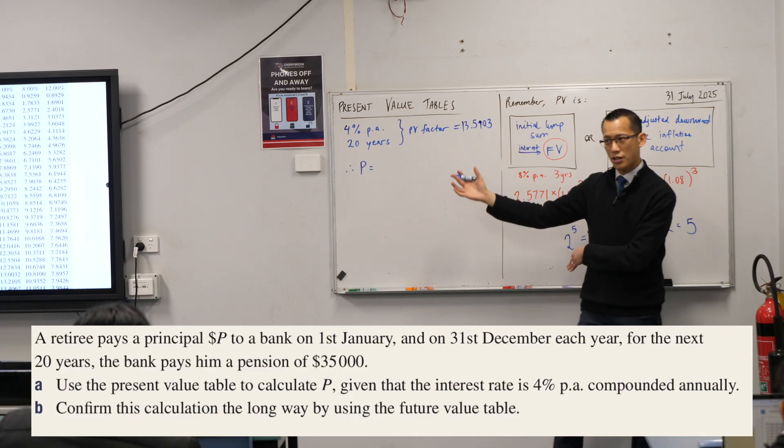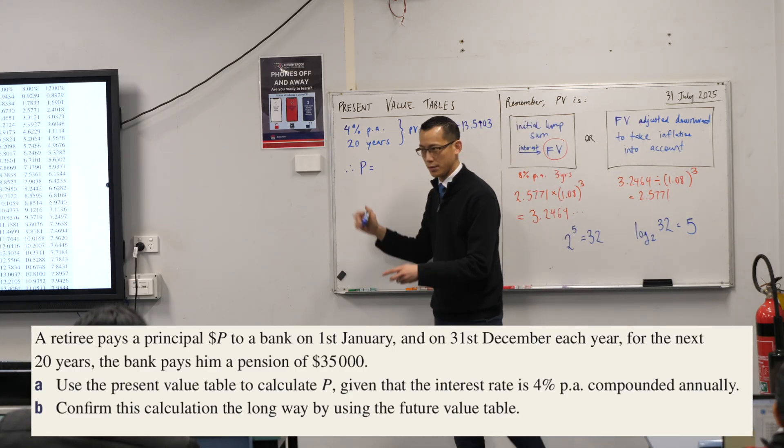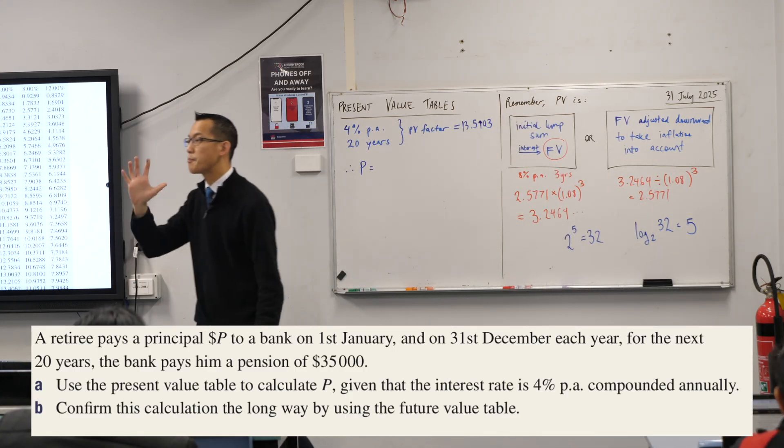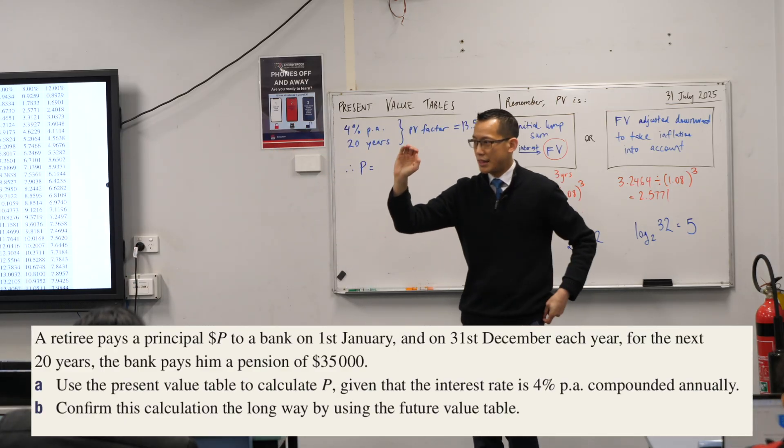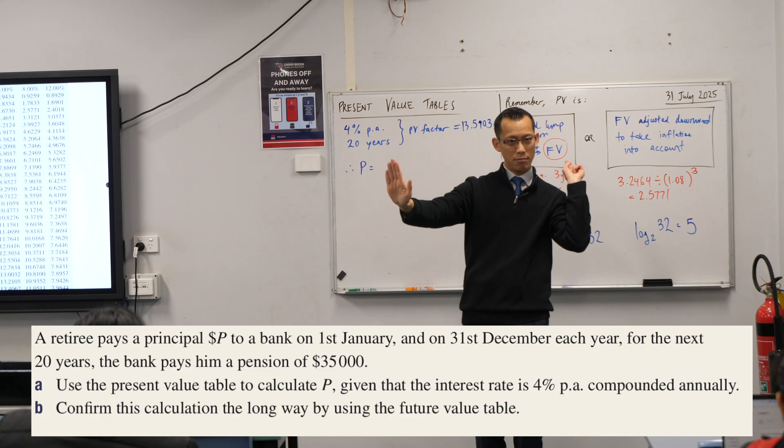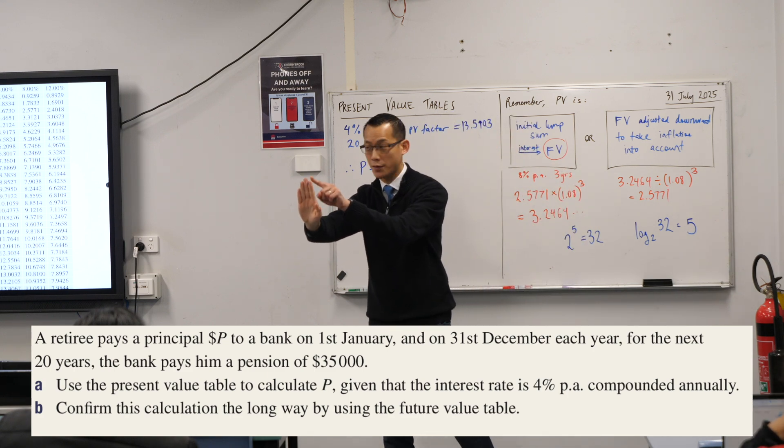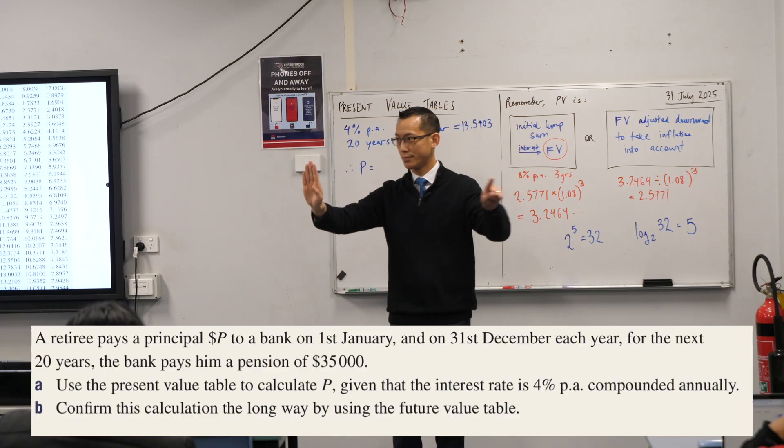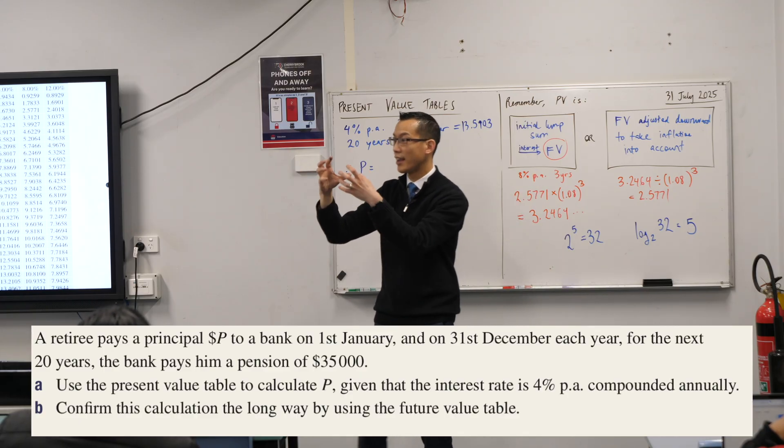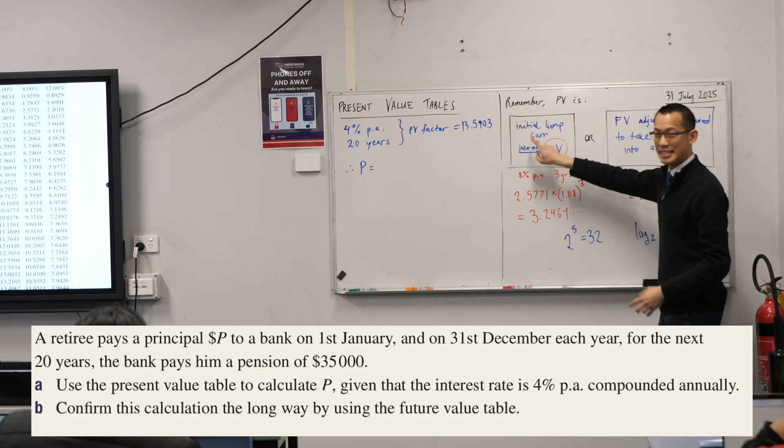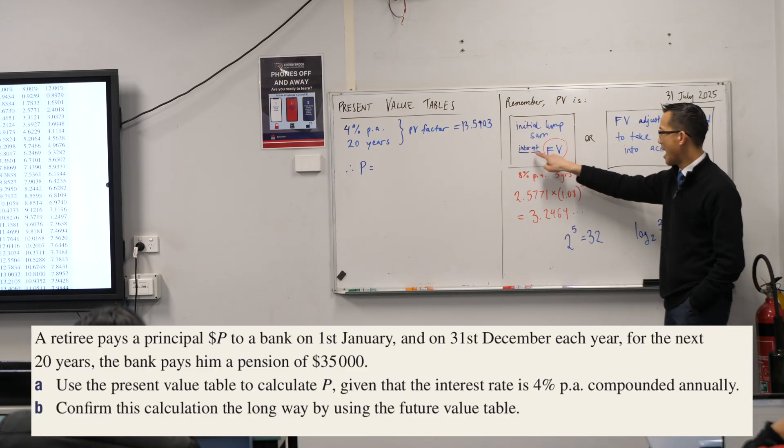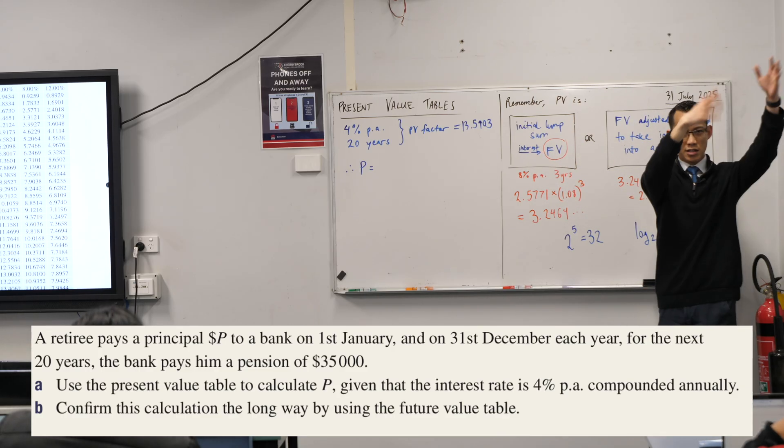Now, when we say, because the question asks us to work out what P the principle is, I want you to again think back to that graph. This is why this graph is so helpful. That principle, the retiree puts it in the bank, and then what does it do for the next 20 years? It just compounds, right? It's a lump sum, a lump sum that gets interest applied to it, and then in the future it will be worth some amount.